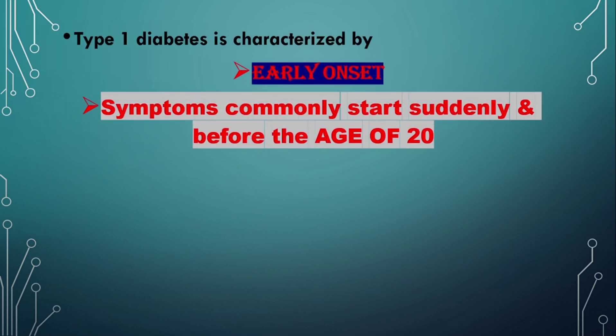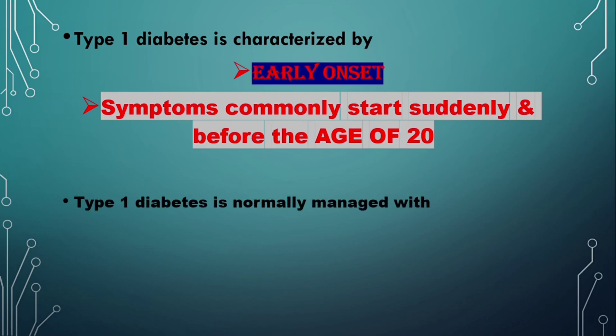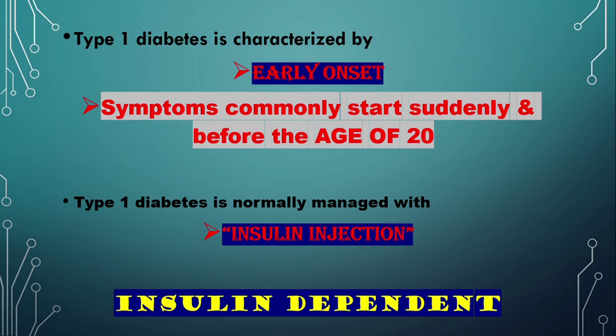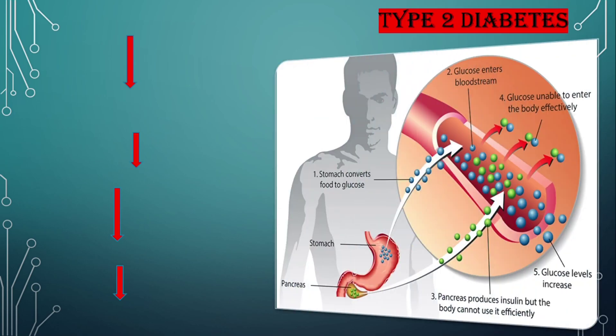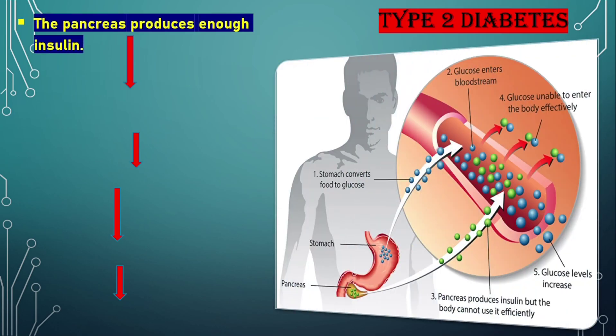Type 1 is characterized by early onset — symptoms commonly start suddenly and before the age of 20. Type 1 diabetes is normally managed with insulin injections, and Type 1 diabetics are therefore called insulin-dependent.